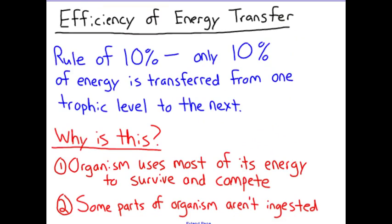The last thing I need to talk about is the 10% rule and how energy is transferred from one trophic level to the next. The rule states that only 10% of energy is transferred from one trophic level to the next. You might ask why only 10% is passed on. The reason is that organisms use their energy — the energy you eat is used throughout your day because you're living, surviving, competing, and carrying out life, and that takes energy.